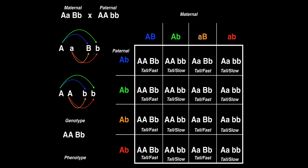For the third column, the egg genotype is little a big B. Crossing that with sperm big A little b: combine the A's — big A little a; combine the B's — big B little b. Phenotypically, because both A and B are heterozygous, this column will have the same phenotype as column one — tall and fast. But notice the genotype is technically different: in the third column the A is heterozygous, whereas in the first column it was homozygous dominant. So even though the phenotypes are the same, the genotypes are different.